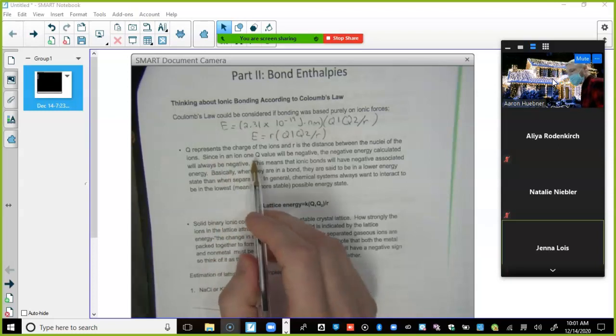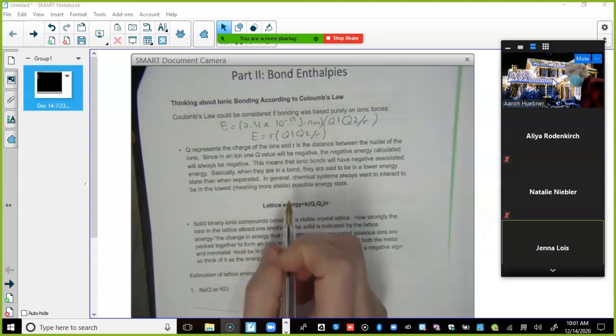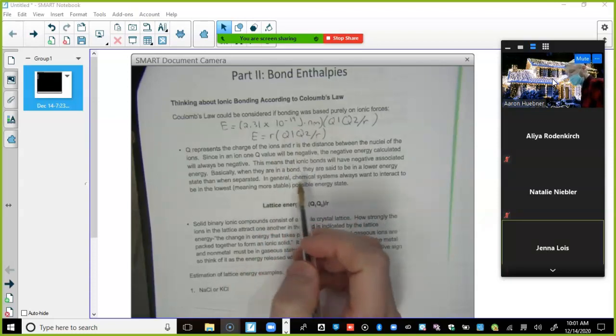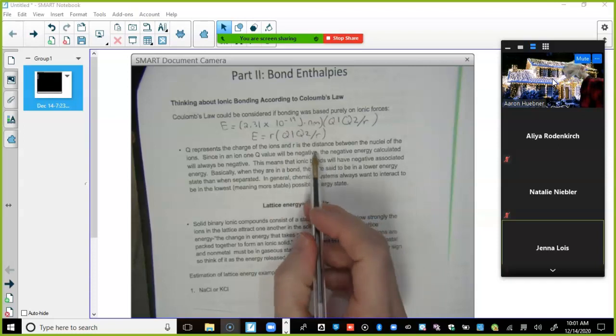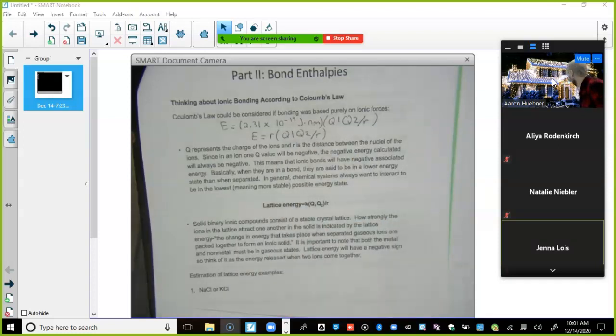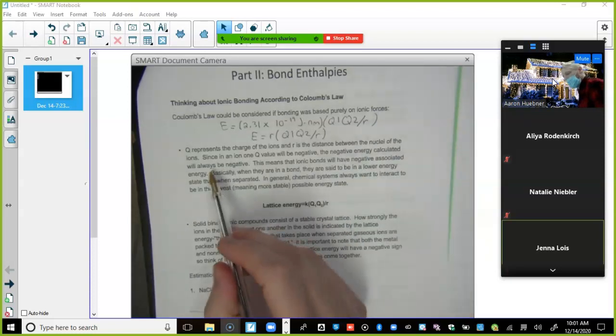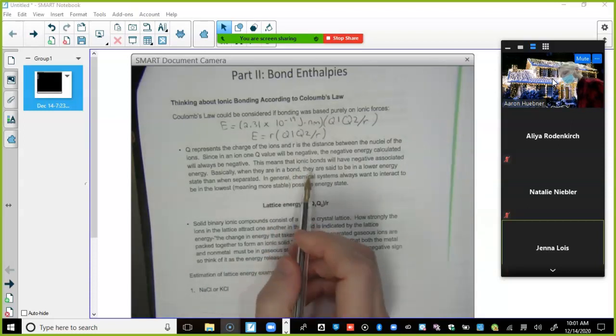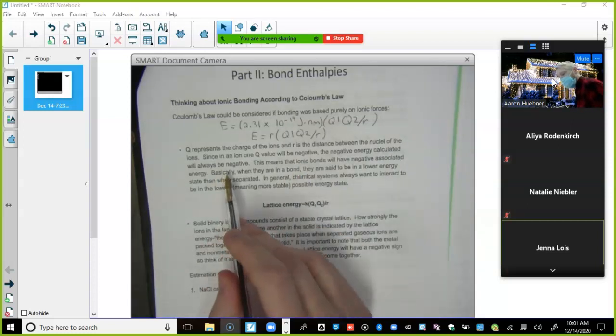All right. So Q represents the charge of the ions, and R is the distance. So here we're doing like sodium and then there's chlorine. We're looking at the charge. And R is the distance between the two nuclei, Na and Cl. Since in an ion, one Q value will be negative, the negative energy calculated will always be negative.